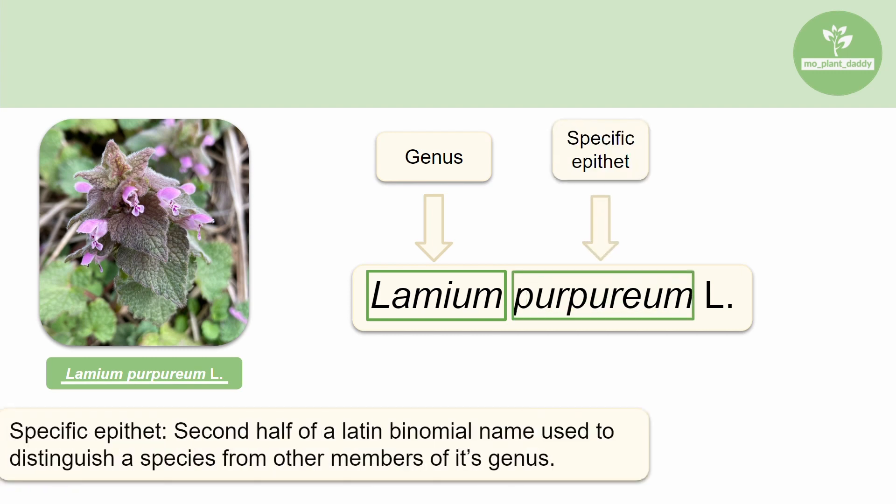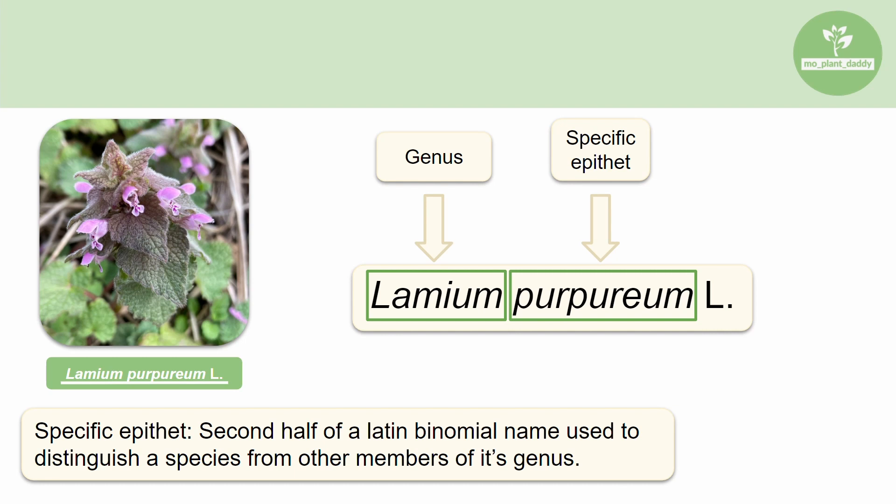The second part of the Latin binomial is the specific epithet. This is used to distinguish a species from other members of its genus. In this case, the specific epithet is purpureum. The genus and specific epithet together are considered the Latin binomial.